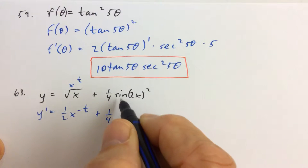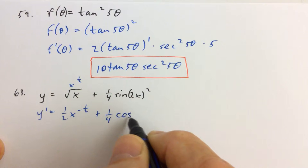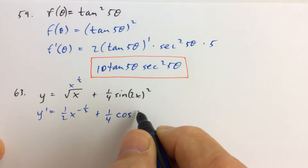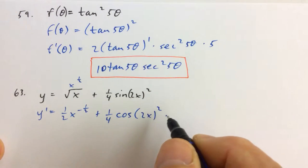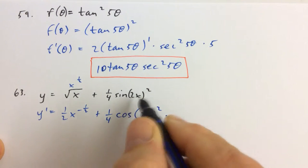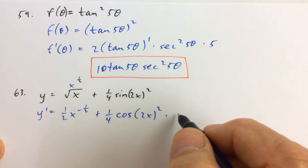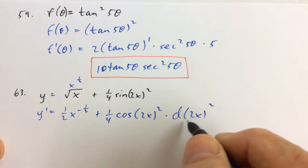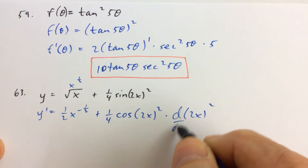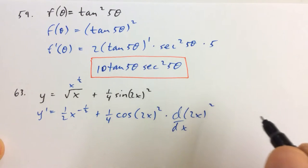And then we have the derivative of the sine — sine is the outside function. The derivative of the sine of anything is the cosine of the anything, times the derivative of the anything, which is the derivative of 2x squared. It's getting a little bit busy here. I can leave it like that, or I can write it as 4x squared as well.